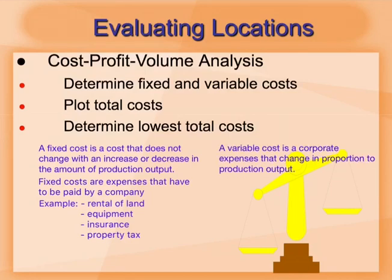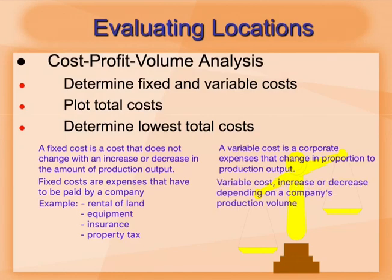While a variable cost is a corporate expense that changes in proportion to production output. Variable cost increase or decrease depending on a company's production volume. For example, cost of raw material, labor, utilities.